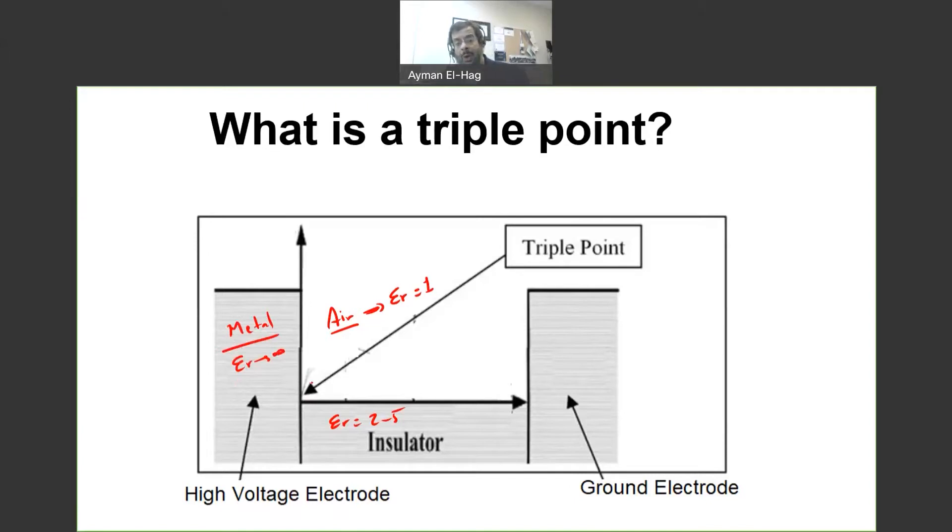Okay, now, why is this point of interest? Why can surface discharge be initiated from this point? Going to basics of physics, epsilon r1 times e1 equals epsilon r2 times e2, which is the multiplication of the dielectric constant and the electric field at the interface between two different materials is constant.